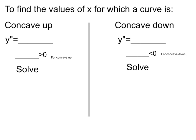To find the values of x for which a curve is concave up, we take the second derivative expression and make that greater than 0 for concave up. For concave down, we take the second derivative expression and find the x values for which that expression is less than 0. We solve each of those expressions to get the values of x.